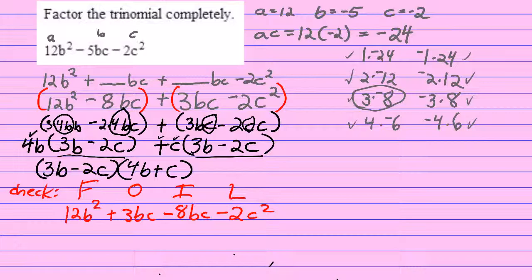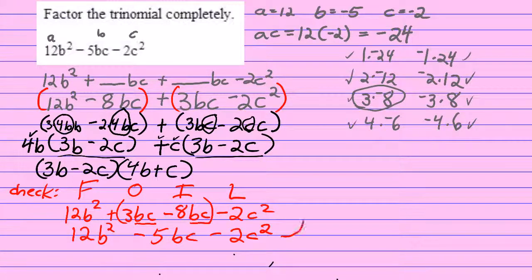Now these terms both have a bc. The letter parts are exactly the same, so we can combine them. 3bc minus 8bc is negative 5bc. So my answer is going to be 12b² minus 5bc minus 2c², which is indeed exactly what I started with.